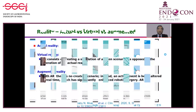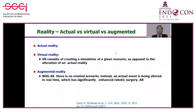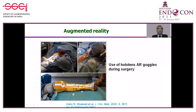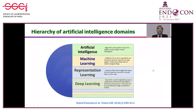Ultimately the system translates into reality. What we are seeing is actual reality; when the computer makes a projection of the same, we call it virtual reality. What we are concerned with is augmented reality — where no scenario is created, but instead an actual event is altered in real time, significantly enhanced like robotics. Similar things are being applied in endoscopy, as we will see shortly. The hierarchy goes from basic AI to machine learning, representation learning, and finally deep learning.